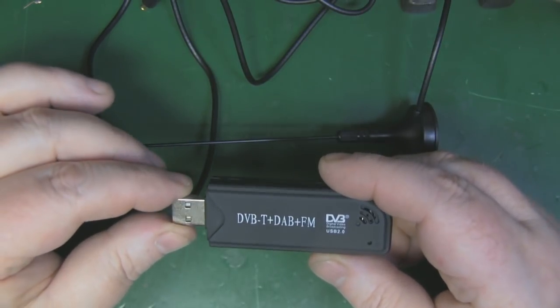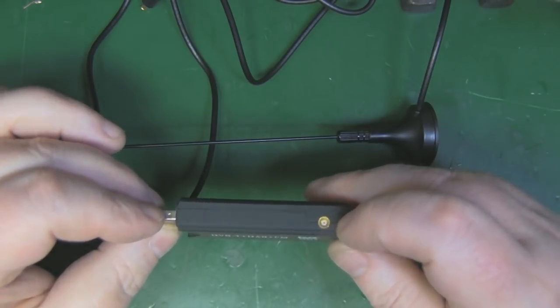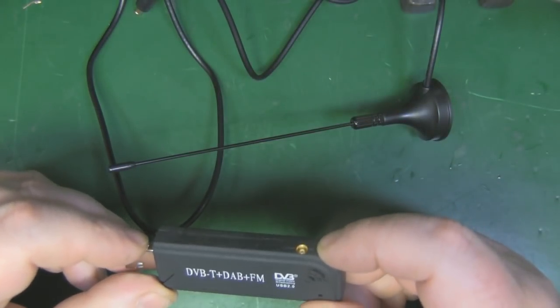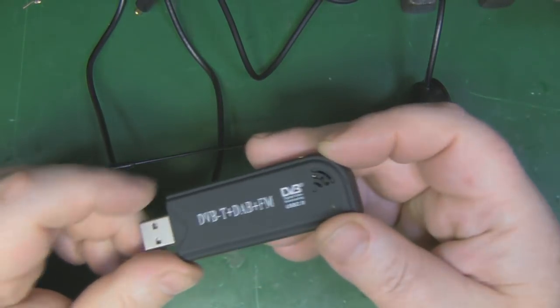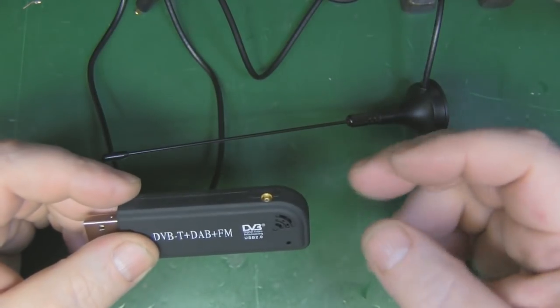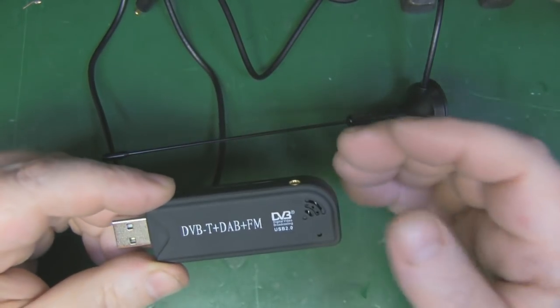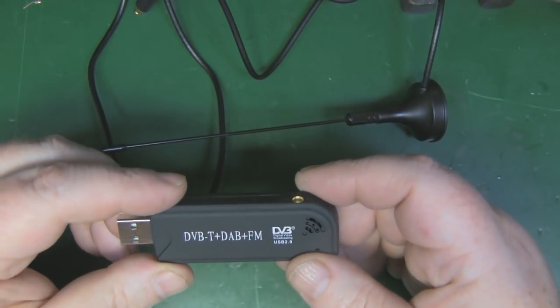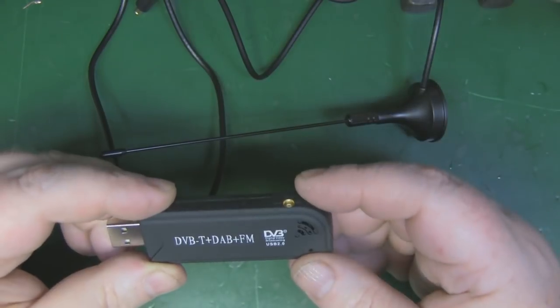The software has already been written for one of these to have a play around with, but I'm going to have to modify this. This is a little MCX connector, a micro coax connector, and I want to replace this with an SMA connector.